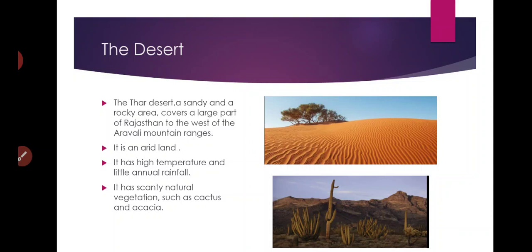It has scanty natural vegetation. As you can see in this picture, here there is sand and in the rocky area, cactus is visible. Cactus and acacia are the natural vegetation of that area due to less rainfall.